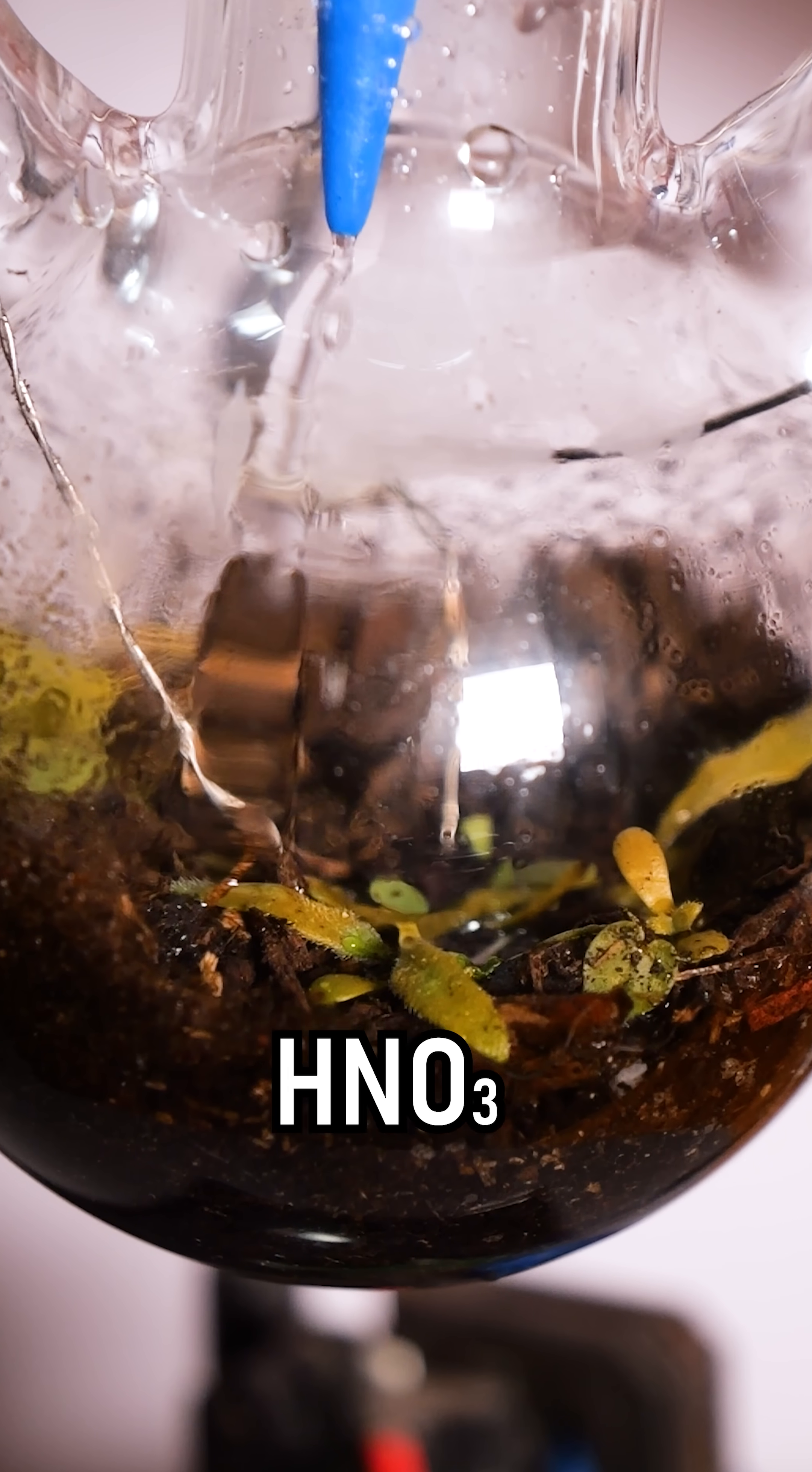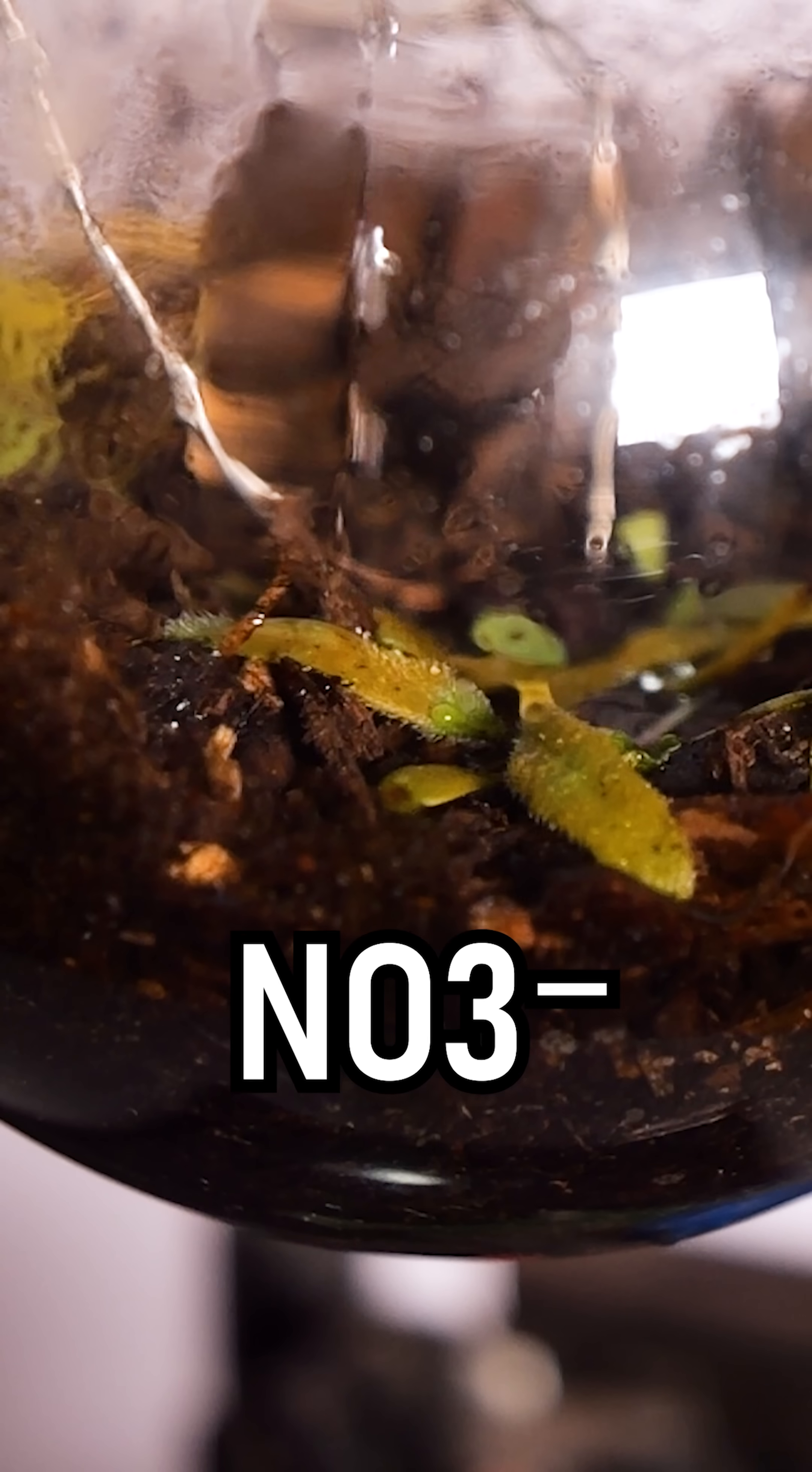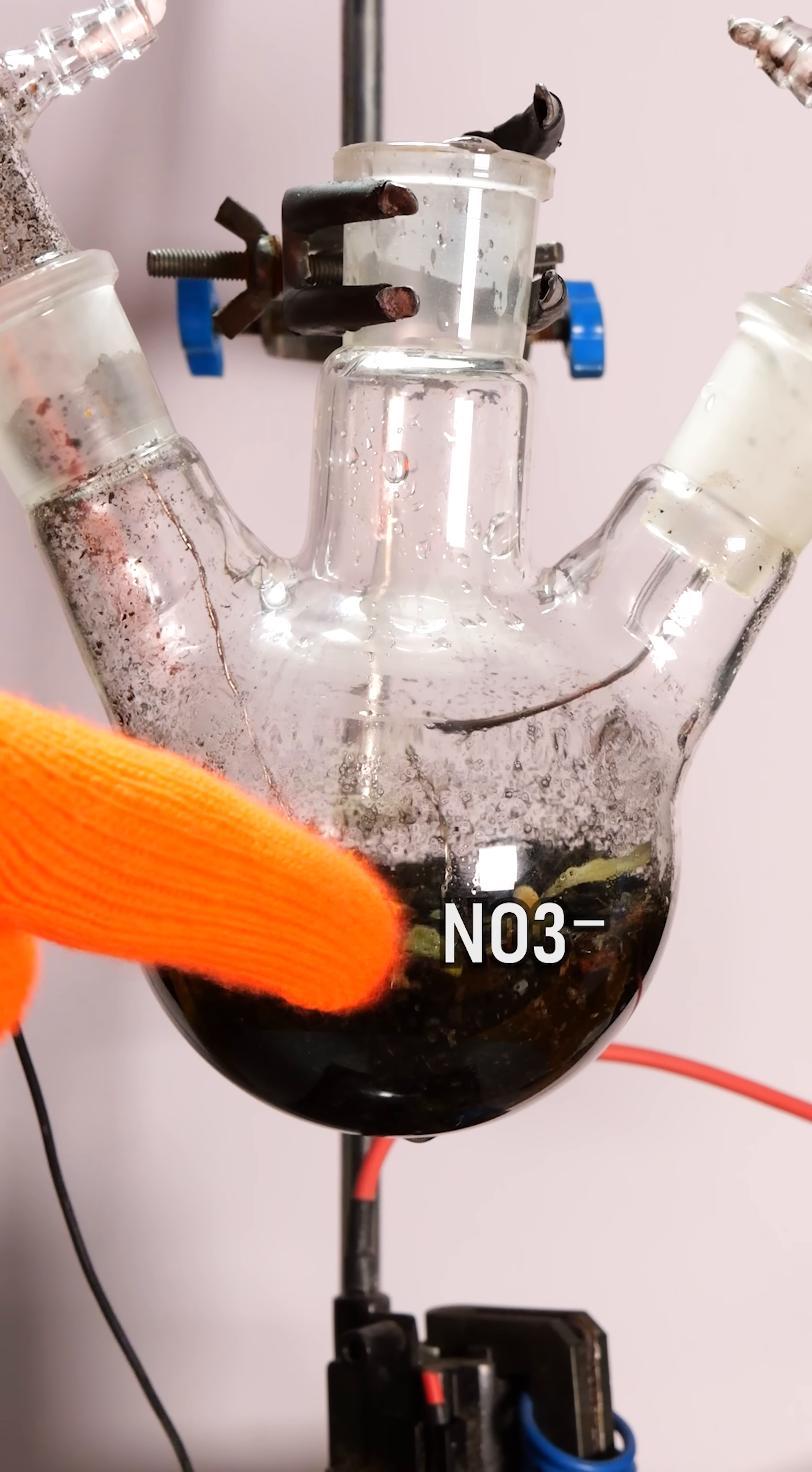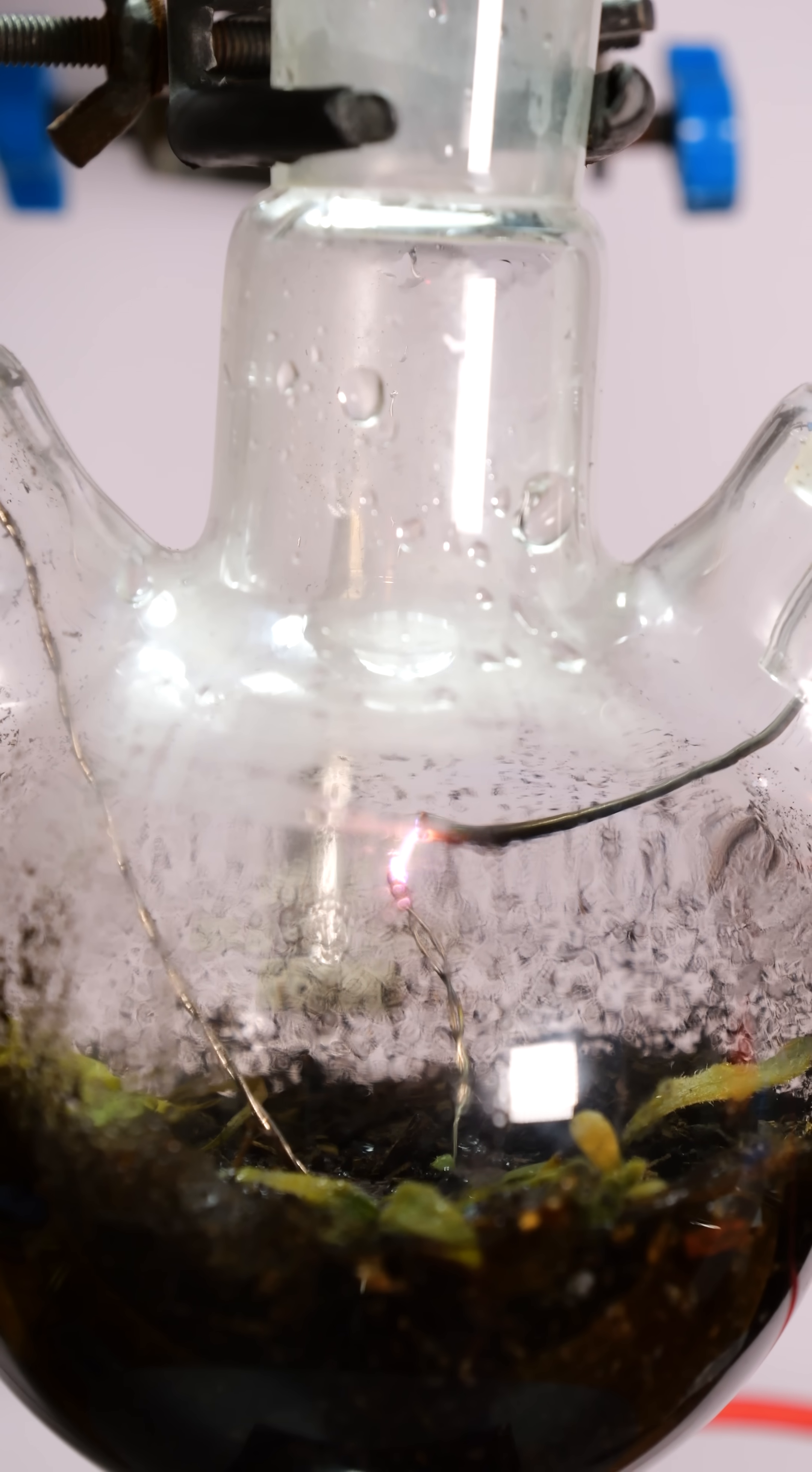This acid quickly seeps into the ground and mixes with natural compounds in the dirt to form a new salt called a nitrate. This fertilizes the plants with nitrogen, helping them build proteins and other plant matter if they're not right next to the arc.